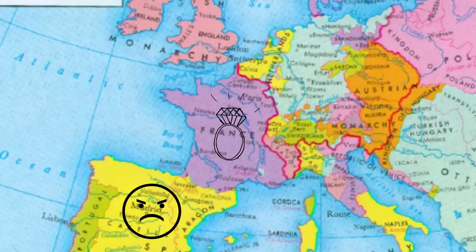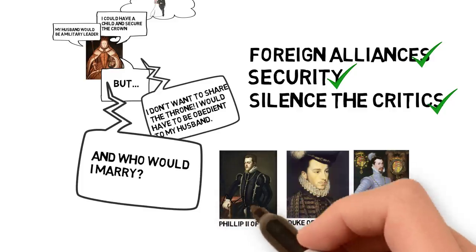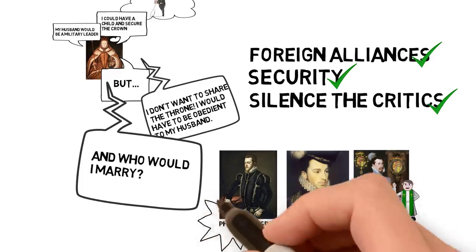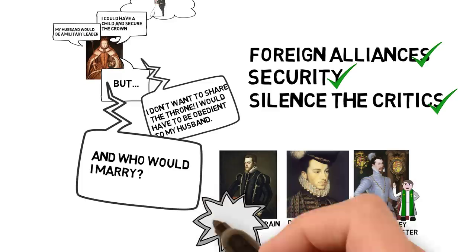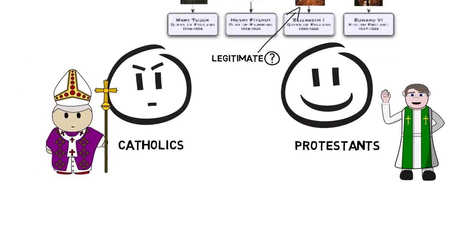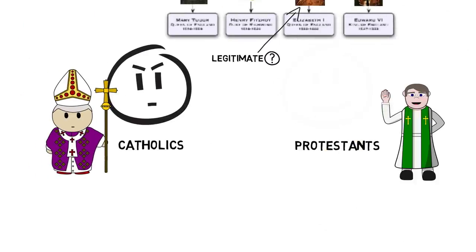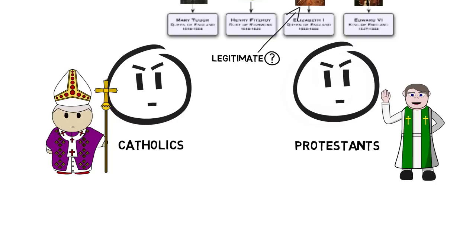However, if she marries someone from France she will upset Spain, and if she marries someone from Spain she will upset France. If she marries Robert Dudley, everyone will be insulted — not only is he English, but he is quite low in rank. Worst of all, Philip the Second was actually married to Elizabeth's sister Mary, which makes him a deeply awkward choice.